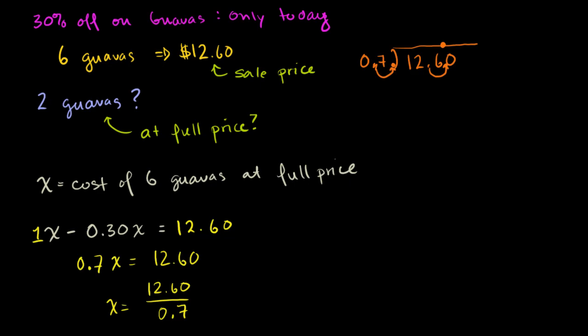And we're ready to just do straight up long division. So 7 goes into 12 one time. 1 times 7 is 7. 12 minus 7 is 5. Bring down the 6. 7 goes into 56 eight times. 8 times 7 is 56. And then we have no remainder. So it's 18, and there's nothing behind the decimal point. So it's 18, in our case $18.